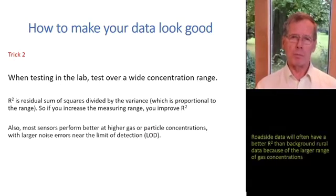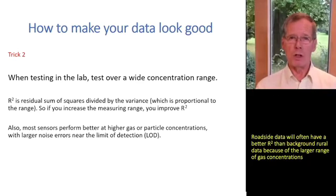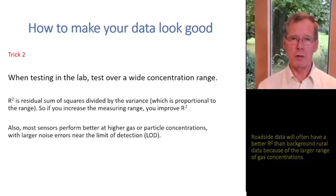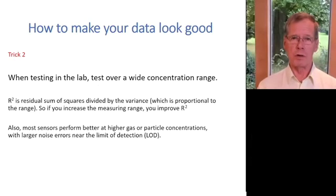Most sensors operating at really low concentration ranges — we're talking about low parts per billion of gas concentrations and under five micrograms per cubic meter of air quality particle densities — when you're looking at these low levels, you start to approach the signal and noise level of your sensors and your sensor electronics. When you're working down there, you'll get higher errors just because you're working near the LOD.